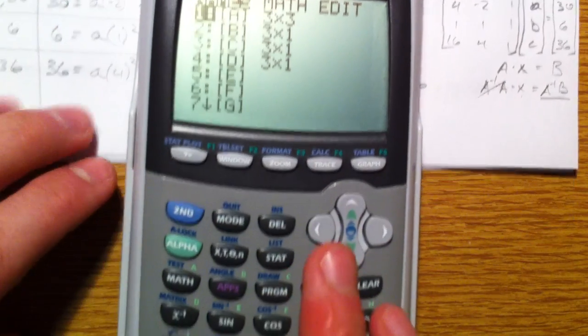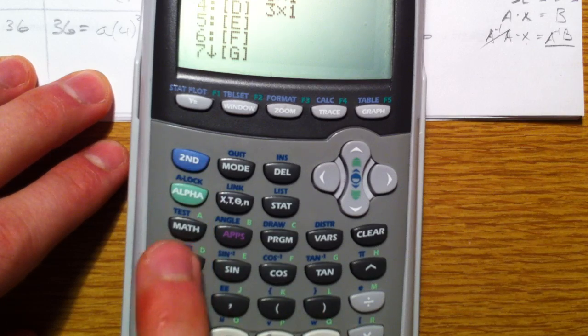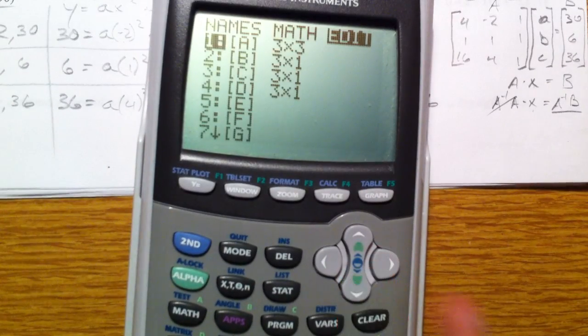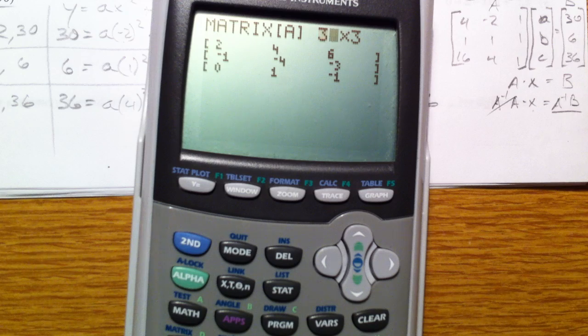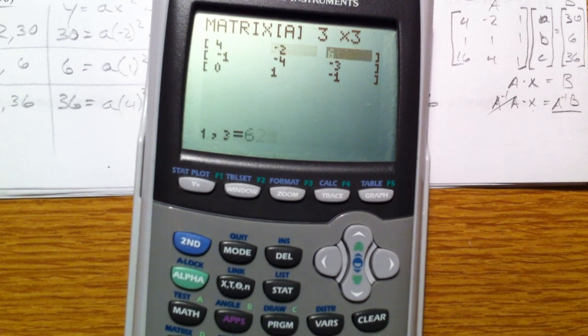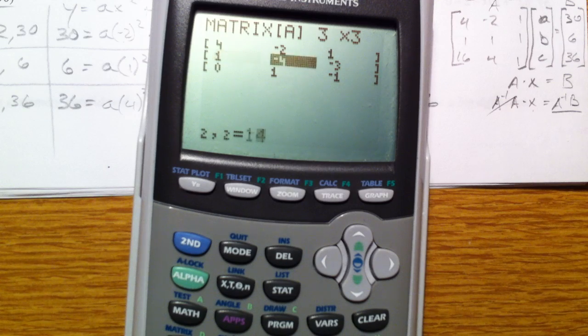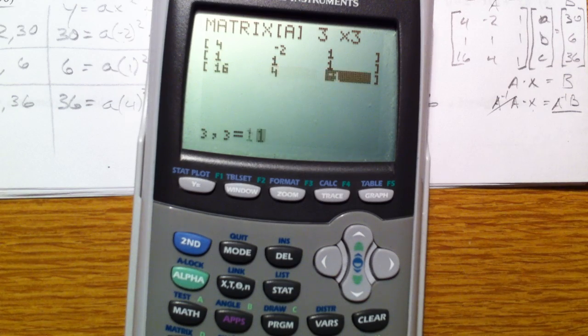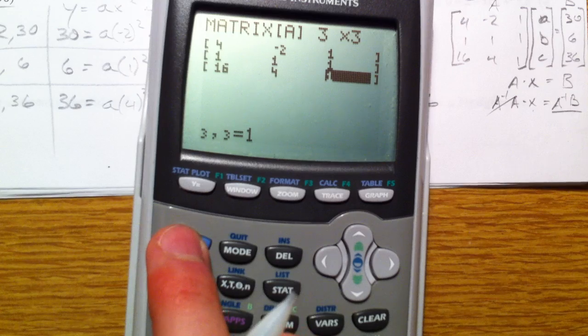So hit the matrix, second, and the matrix button right here. Let's edit our matrix A, which is 3 by 3. 4, negative 2, 1, 1, 1, 1, 1, 16, 4, and 1. If you hit enter, it automatically scrolls over.